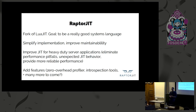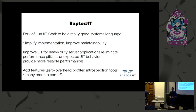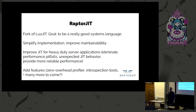We want to eliminate performance pitfalls — meaning small changes that have big impact on performance — as well as unexpected JIT behavior. We want to make it easier to understand the JIT compiler and to use it. Under the bottom line, we want to provide more reliable performance. Right now LuaJIT performance is great; we just want to make it more reliable and maybe even better in some cases.